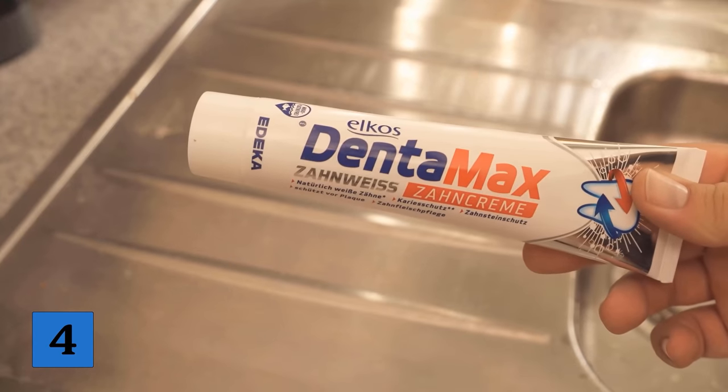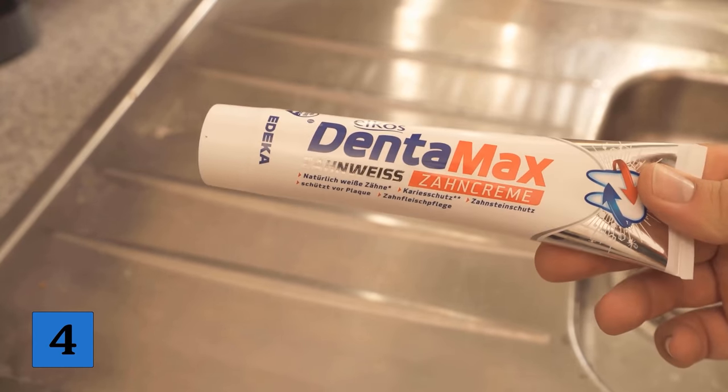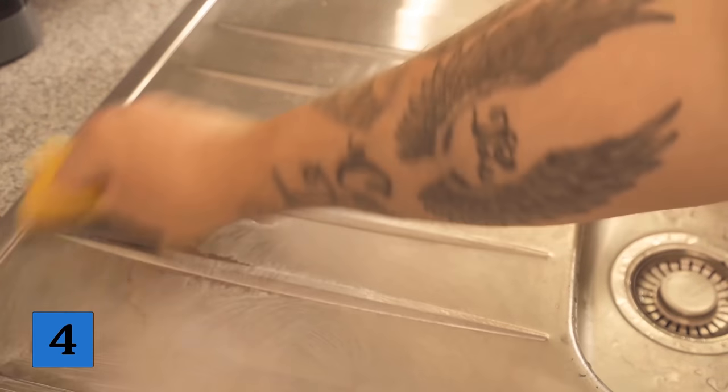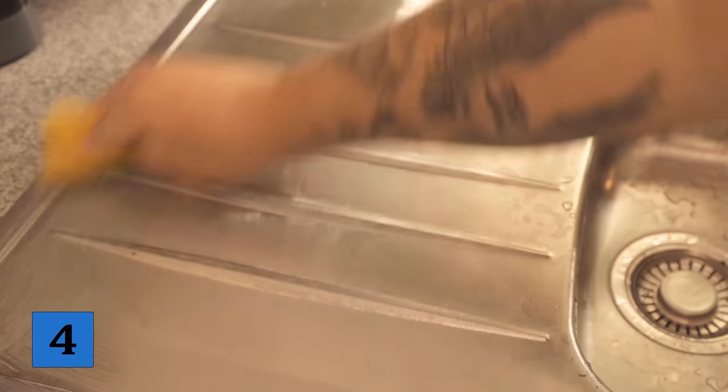And that brings us to cleaning trick number 4. Here we tackle the sink. Because here too, in most cases, it's stainless steel. And we get that as you've seen before with toothpaste really, really nice to shine. For this I put some toothpaste on a sponge and distribute it now here on the entire sink, so that really everywhere something of the toothpaste is to be seen. If you have then distributed everything really nice, you should first let it act a little. I usually wait 10 minutes before I start wiping everything off again.